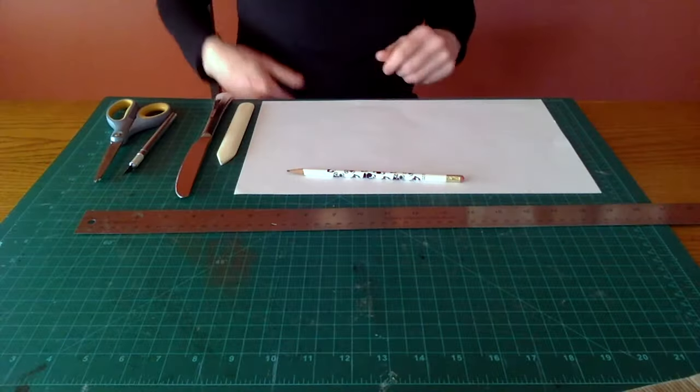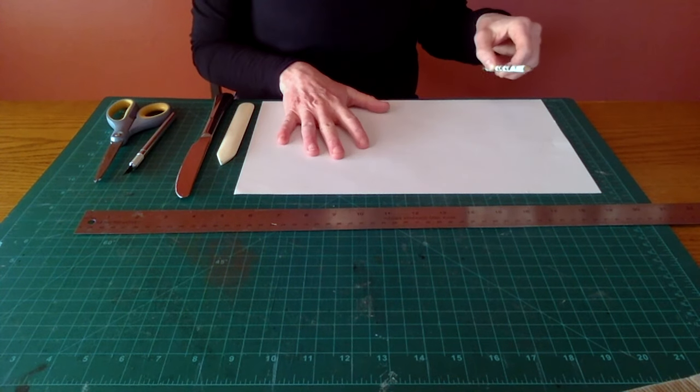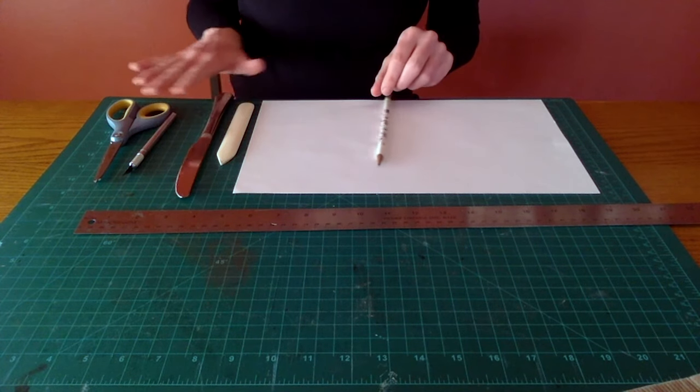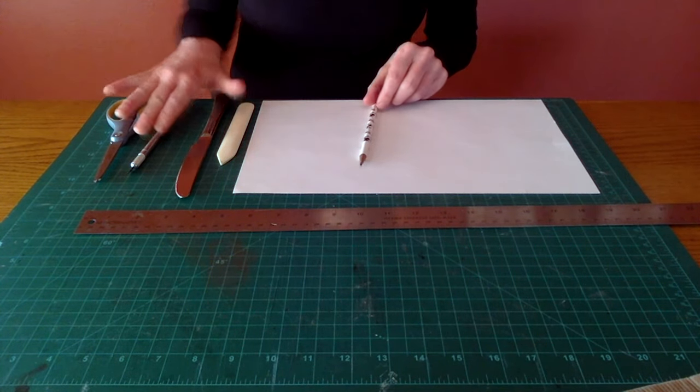The supplies we'll be using today are a pencil, a rectangular sheet of paper, a bone folder or table knife, scissors or craft knife, and a ruler.